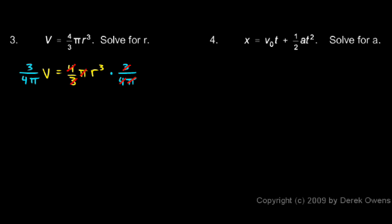And I'll rewrite the equation like this. r cubed equals everything else that's over here. And I'll write it like this: 3V over 4 pi.